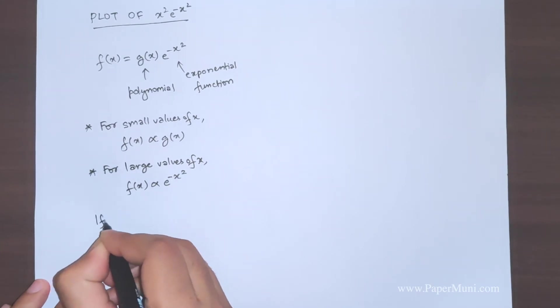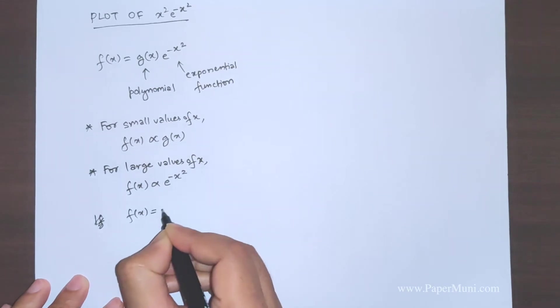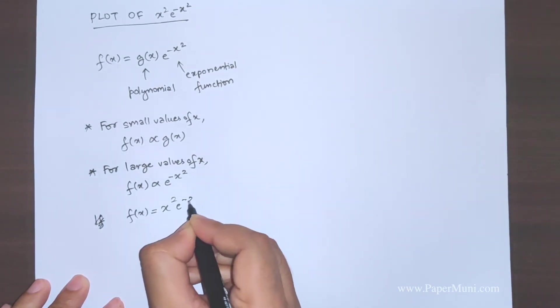Now in this case you have been given that f(x) is x square e to the power minus x square.